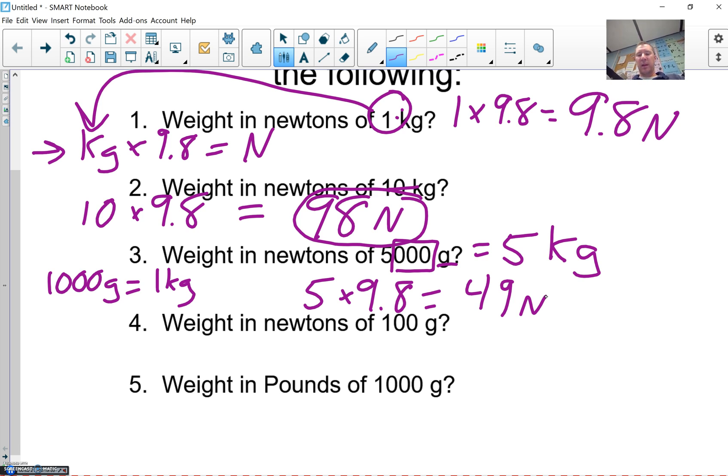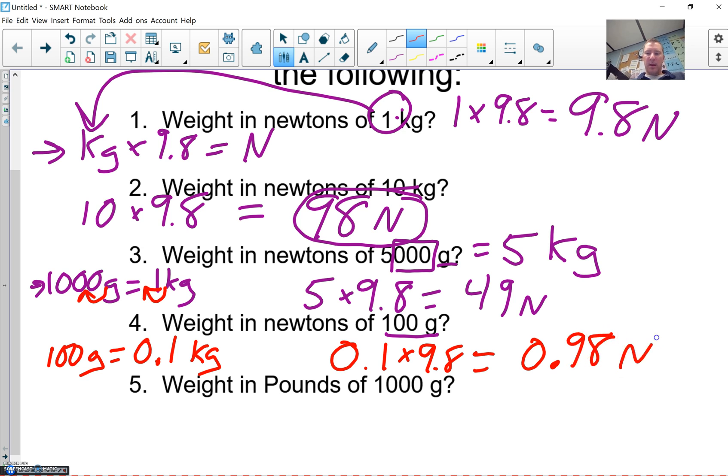Weight in newtons of 100 grams. Again, we're doing grams to kilogram conversions. I did give you this one in the last slides, but again, if you know this piece, 1,000 grams is 1 kilogram. If you move the decimal place over 1, you've got to do it on this side. So 100 grams equals 0.1 kilograms. I do like to put the 0 in front just so that you notice the decimal point more. And when we've got that, we're back to kilograms times 9.8, and this time it's just 0.98 newtons.